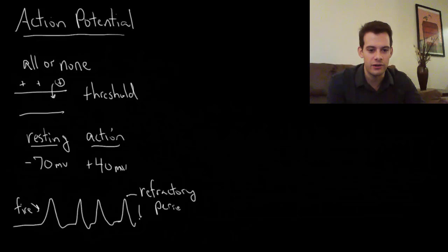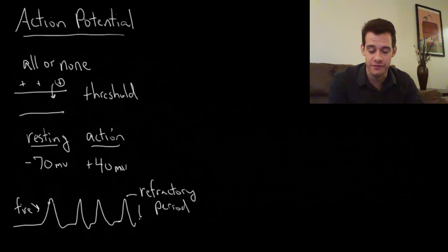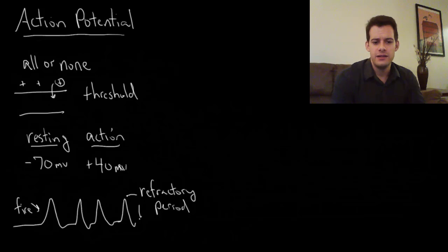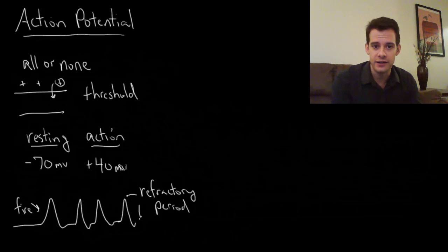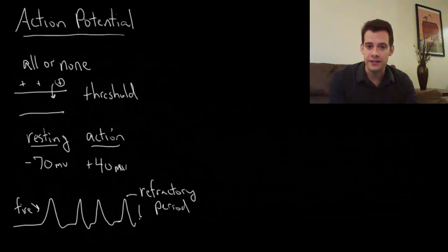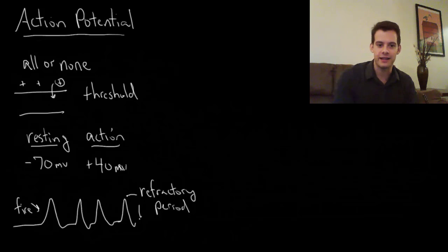When we stimulate a neuron, it doesn't stay turned on — it can't stay at positive 40, it has to go back to minus 70. We can continue our gun analogy with a machine gun: if you hold down the trigger, you get constant stimulation, but it doesn't stay turned on or release a solid beam of metal. Instead it fires and then it stops.